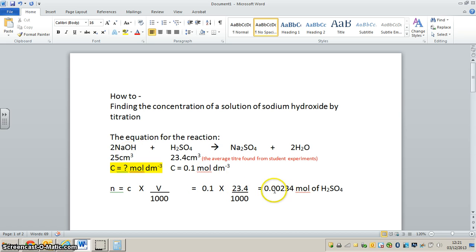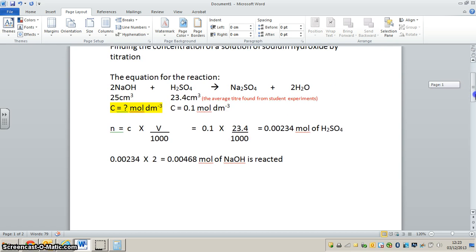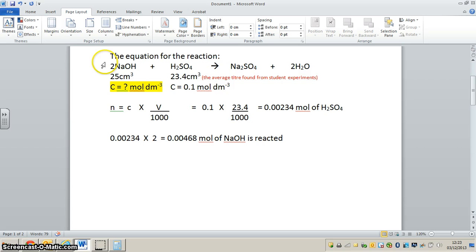Let's add that into the description. We've got 0.00468 moles of sodium hydroxide that has reacted. Now we need to look a little bit more at the volume of sodium hydroxide. We know that this number of moles is actually in 25 cm³.